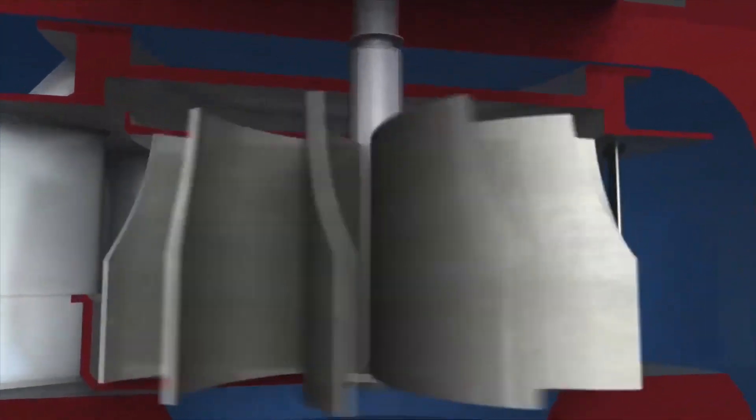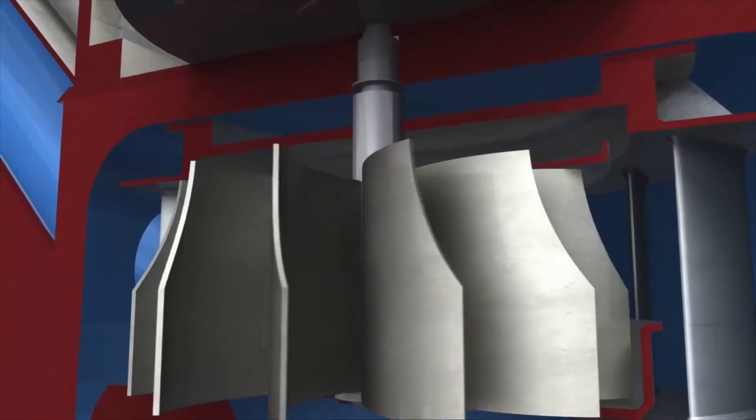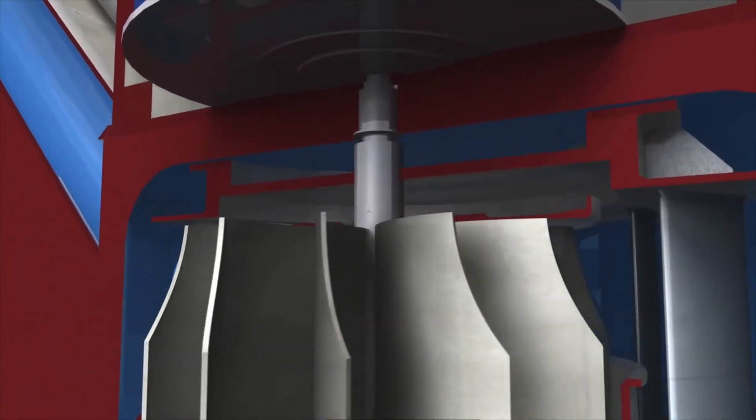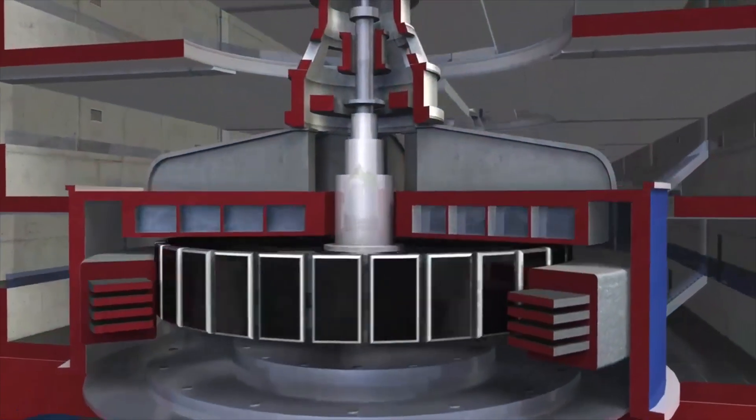At the base of the penstock, the water passes through a turbine. The giant blades rotate the drive shaft in the turbine, which is connected to a large generator. This converts the mechanical energy into electricity.